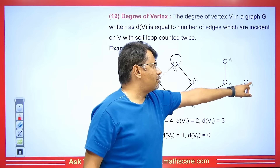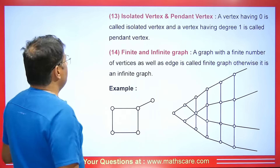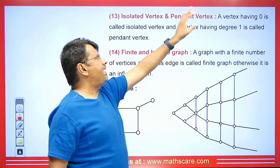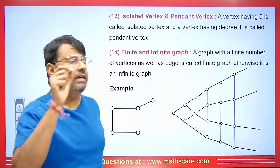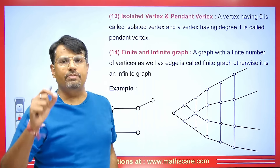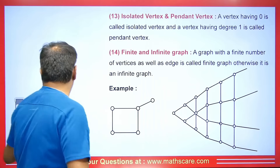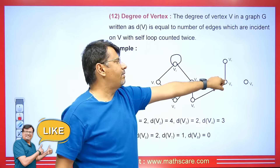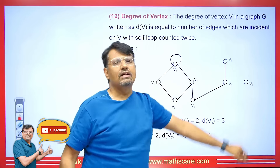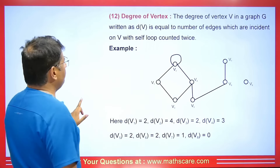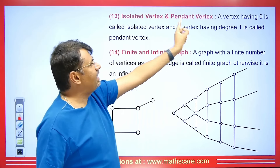The degree of V8 will be zero because it is not connecting with any edge in this graph. Now, when the degree of any vertex is zero, it is called an isolated vertex. When the degree is one — like V7 here — it is called a pendant vertex. So V7 is a pendant vertex and V8 is an isolated vertex. A vertex having degree zero is called an isolated vertex, and a vertex having degree one is called a pendant vertex.